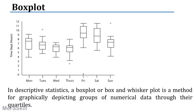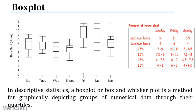A box plot is also called a box and whiskers plot. Everything is divided into four quartiles, each representing 25% of the data. For example, looking at hours of sleep on Monday: the maximum is nine hours and the minimum is four hours. Twenty-five percent of people get nine to eight hours, another 25% get seven and a half to eight hours, another 25% around six to seven and a half, and the last 25% get four to six hours of sleep.